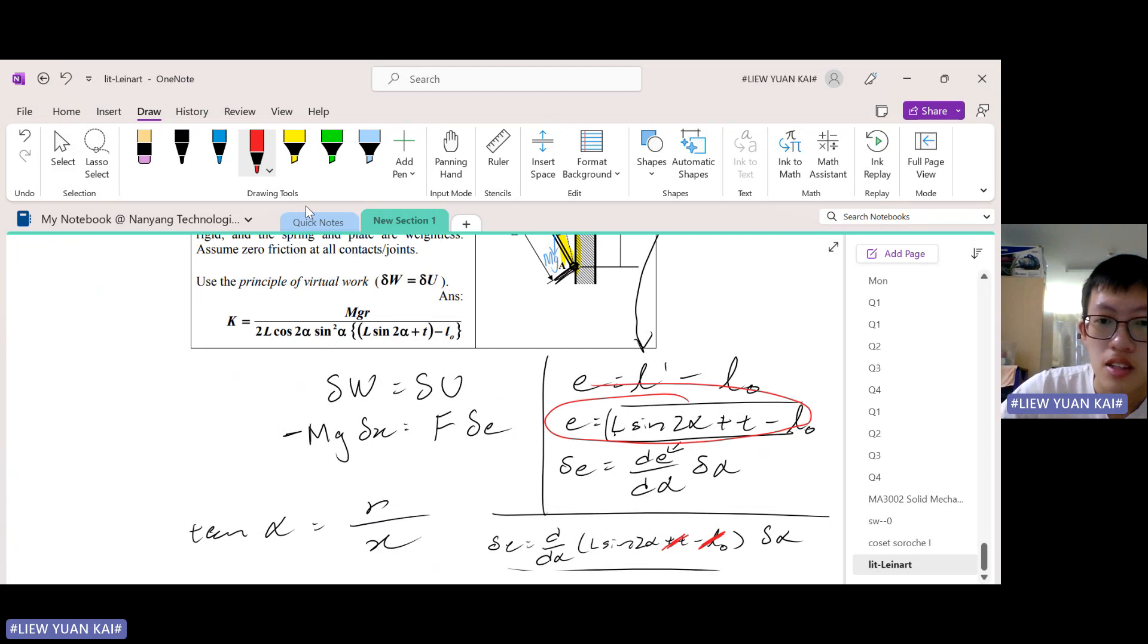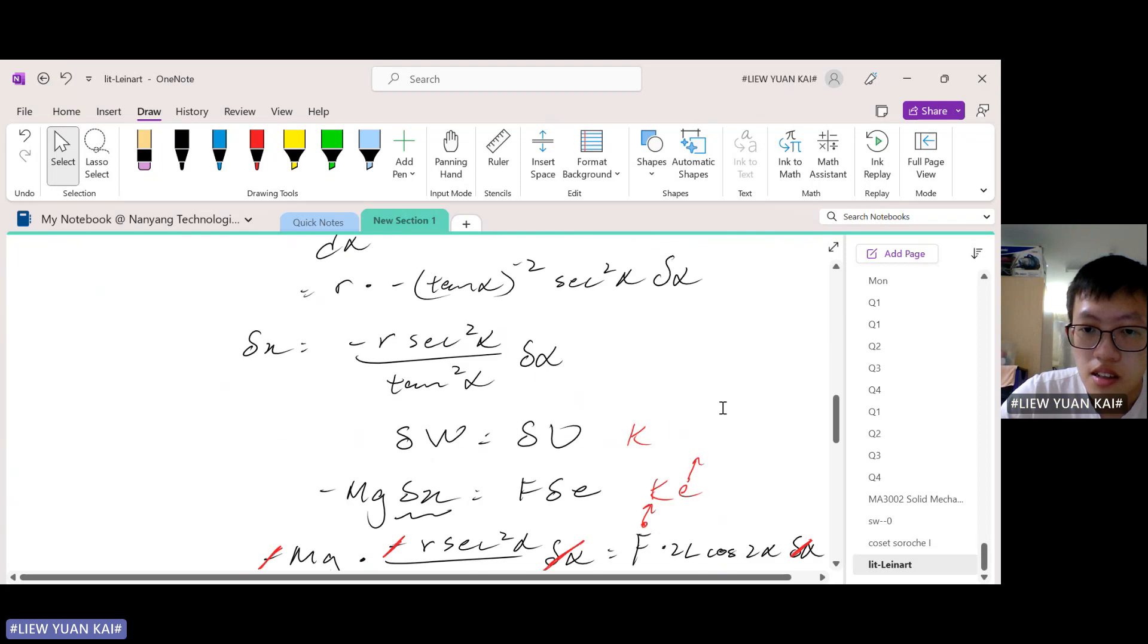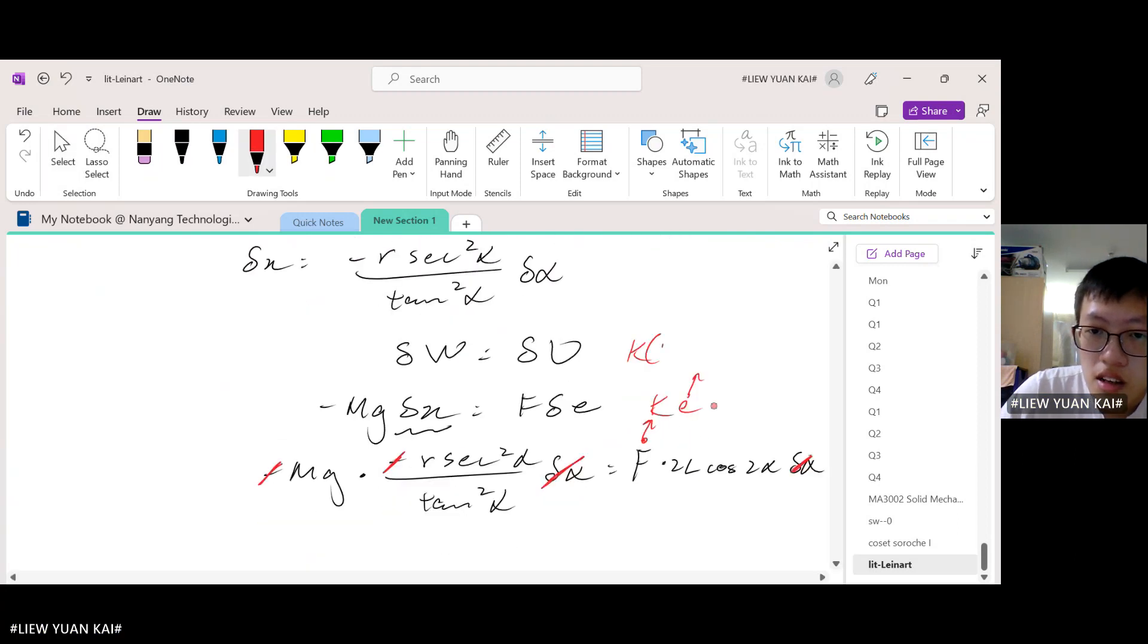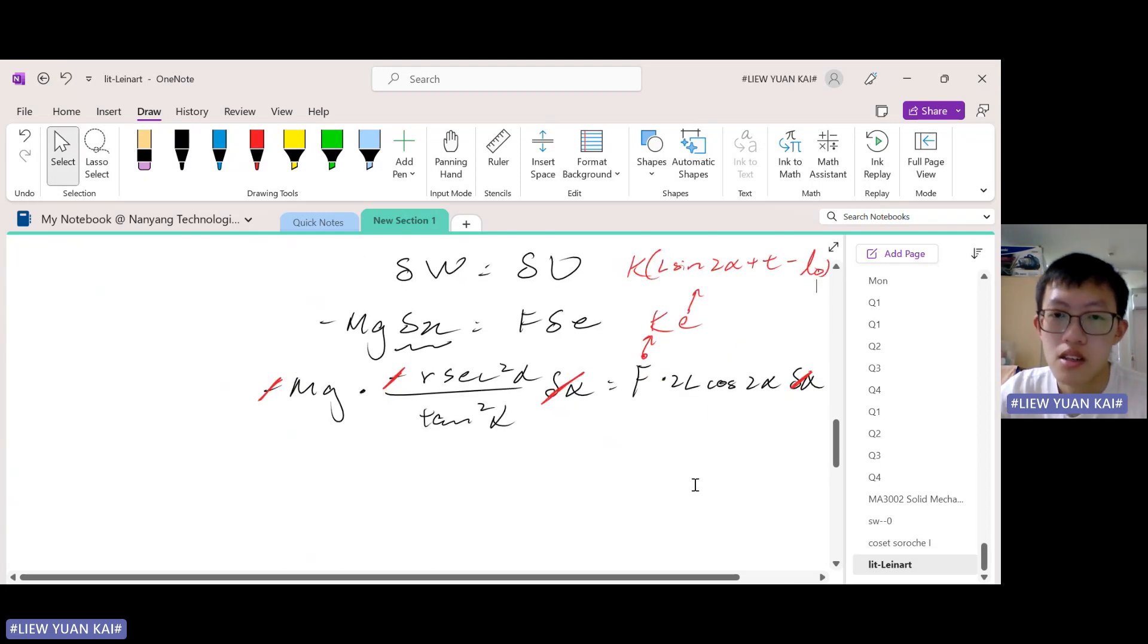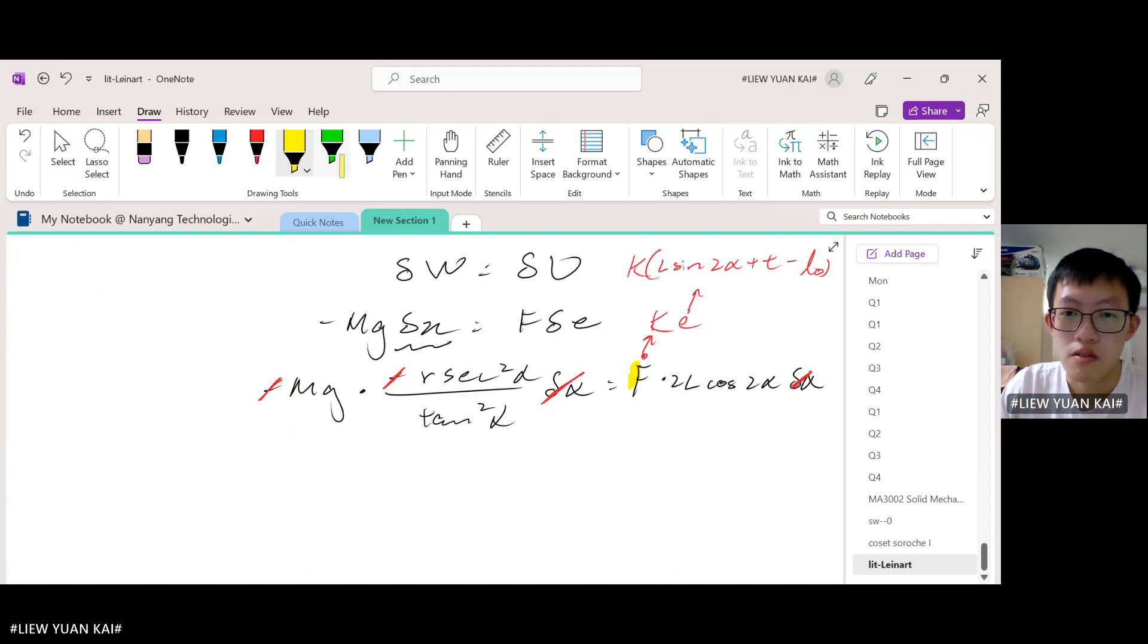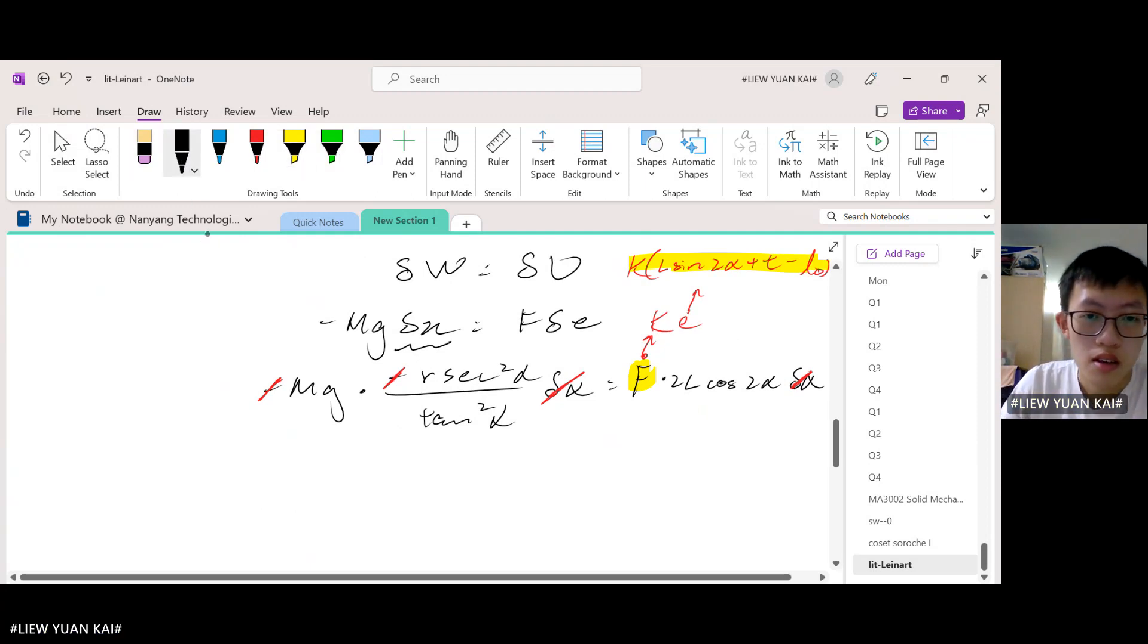To be this over here. So we have to sub that in also. So that's L sin 2α plus T, L sin 2α plus T minus the extension, I mean minus the original length. So we're going to replace F with this.